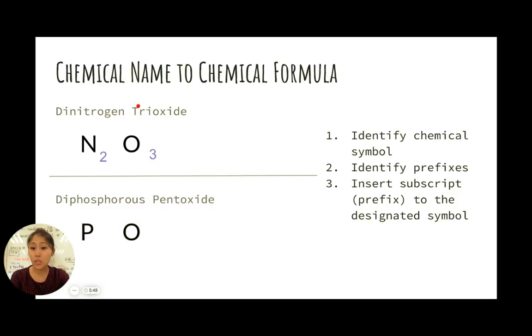So diphosphorus pentoxide - you have phosphorus and you have oxygen. Di means two. Pent means five. So you have two phosphorus atoms and five oxygen atoms bonded together.